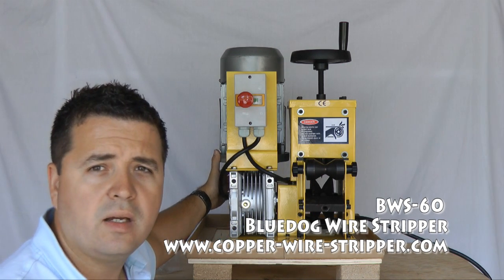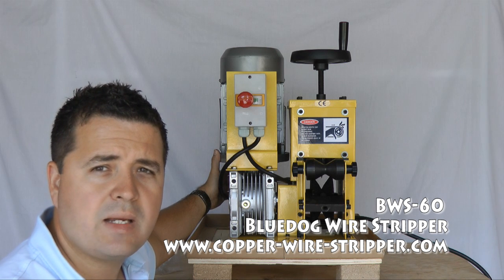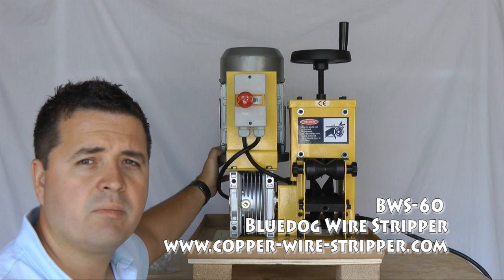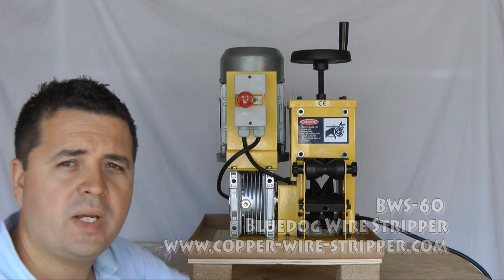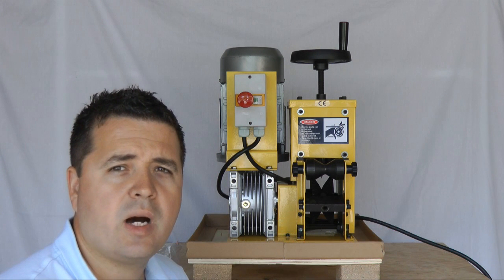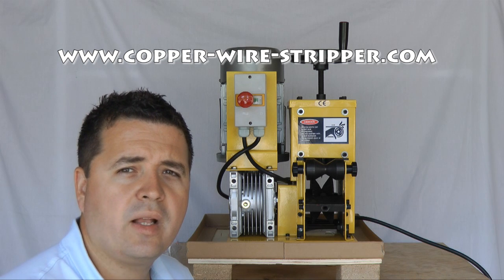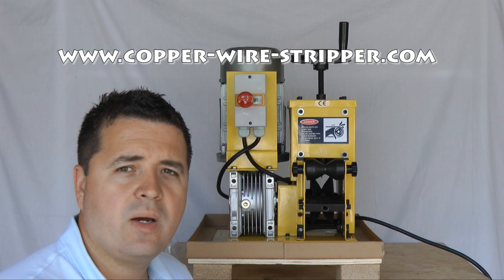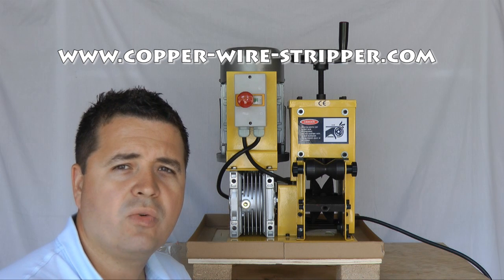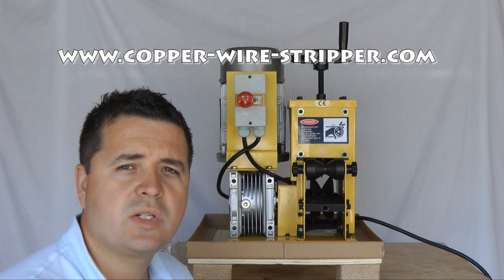So, again, this is the Blue Dog BWS60 wire stripping machine. I'm glad you watched this video. And if you'd like to know more information about it, please go to www.copper-wire-stripper.com. I got all of the information below in YouTube. You can check it out and hopefully you'll be able to buy one. Thank you very much. Bye-bye.